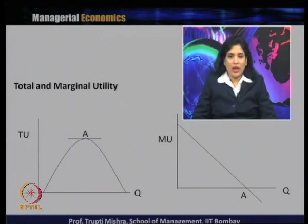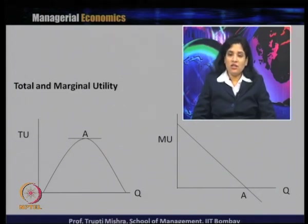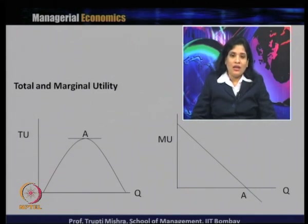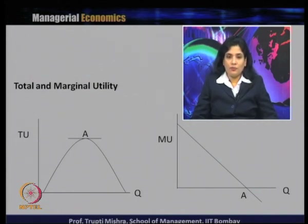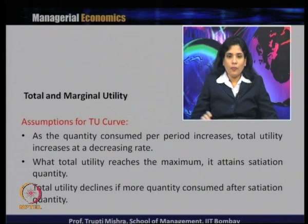Initially, marginal utility decreases, then reaches zero, and then goes negative. This means there is a decreasing slope of total utility — even if total utility is increasing, it increases at a decreasing rate. When it starts decreasing, marginal utility goes in a negative direction.